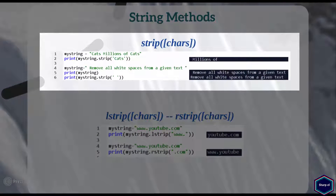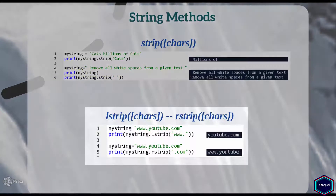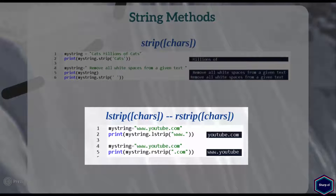The strip method returns a string where all leading and trailing characters passed as argument are removed from the original string. If there is no argument, strip method removes all leading and trailing whitespace characters. In my first example I have string 'cats' as argument, and in my next example I have a whitespace character as argument which removes all leading and trailing whitespace characters from the original string. The lstrip and rstrip methods are just like the strip method, but lstrip removes the leading and rstrip removes the trailing characters passed as argument.